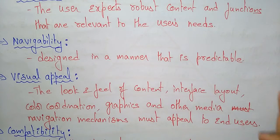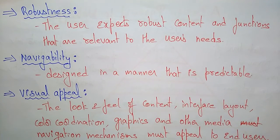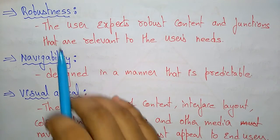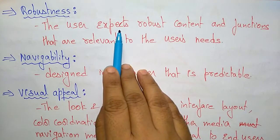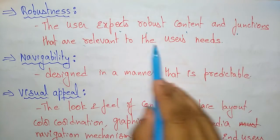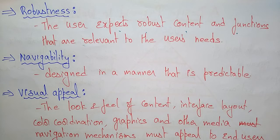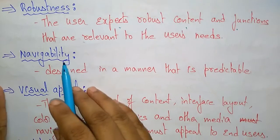Next is robustness. Whatever web app you are using, if it is having robustness, the user expects robust content and functions that are relevant to the user's needs. If users can achieve robustness on your web app, then you can achieve the goal — meaning your web app is an excellent one.